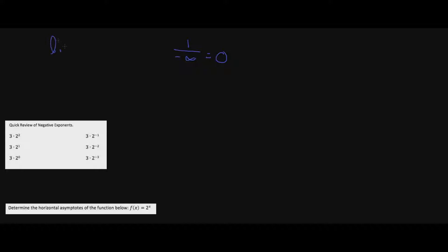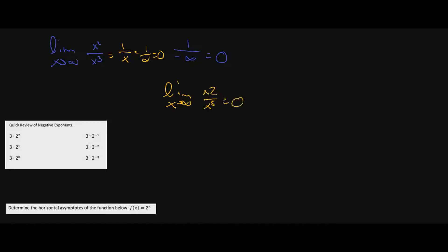This is always true when dealing with power functions. For example, the limit as x approaches infinity of x squared over x to the third: we get 1 over x, which is 1 over infinity, which is zero. The bottom grows bigger than the top, we get zero. It doesn't matter if it's negative infinity — it's still going to be zero.